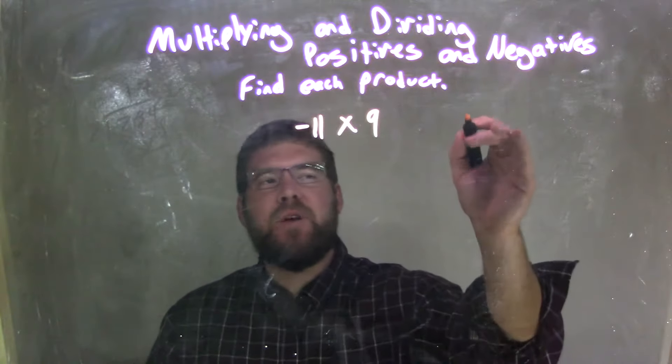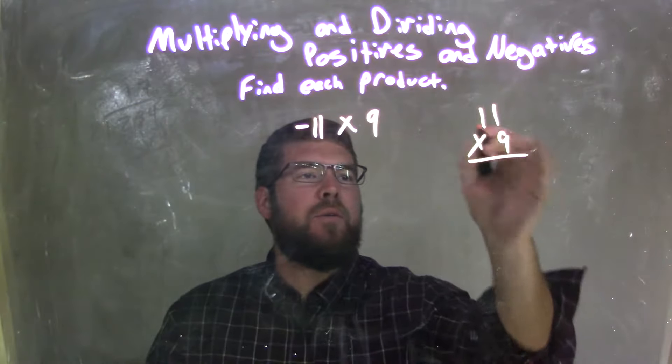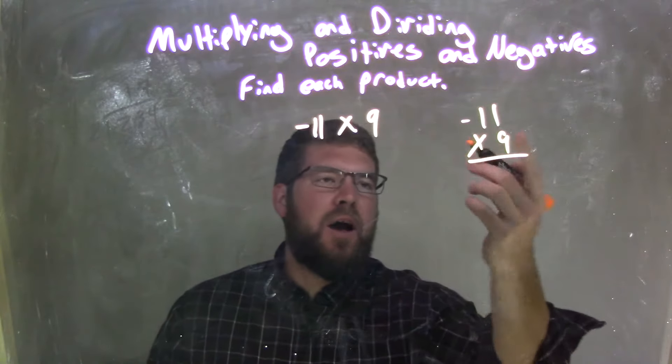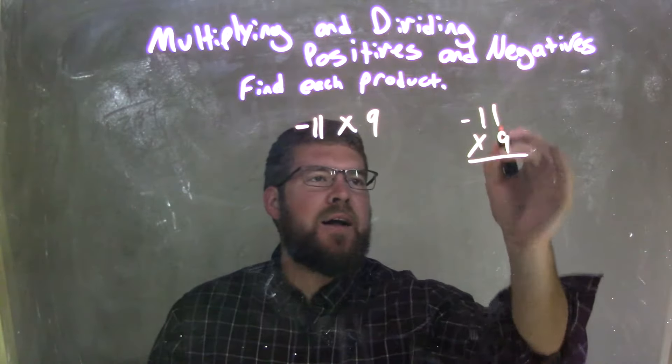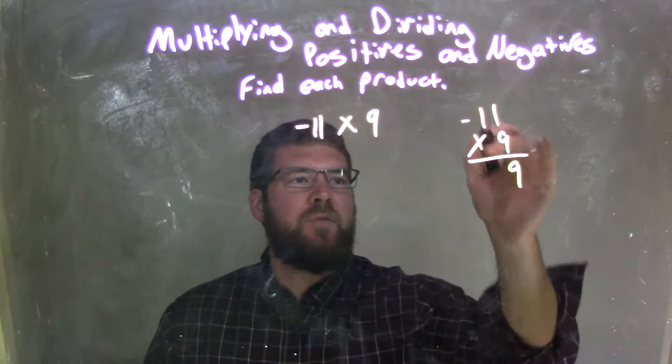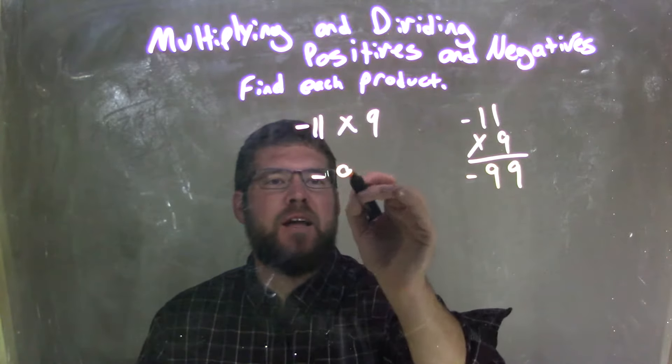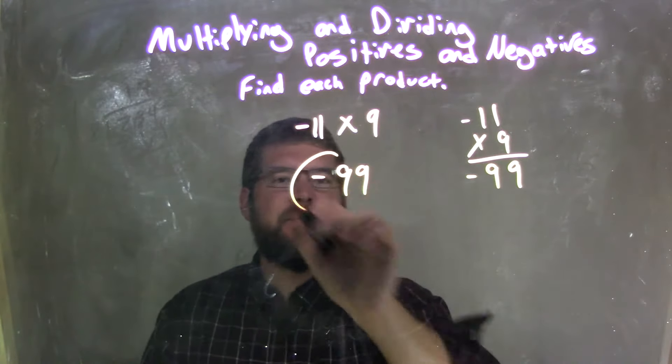I can do the traditional method, right? 11 times 9, knowing that one of them is negative. The final answer must be negative, so 9 times 1 is 9, and 9 times this 1 is 9. Bring down the negative, and our answer here is negative 99.